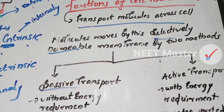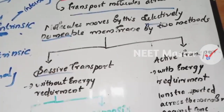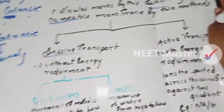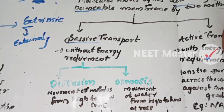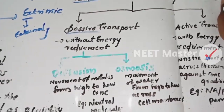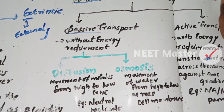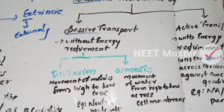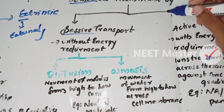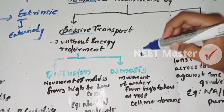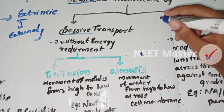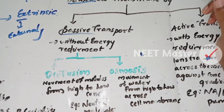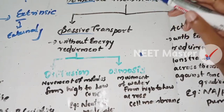Passive transport requires no energy. It includes diffusion — movement of molecules from high concentration to low concentration — and osmosis, which is the movement of water from high concentration to low concentration across the membrane.